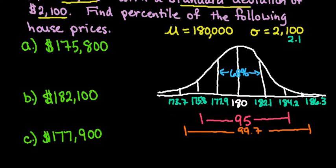So you always want to label it. Basically what we're looking for is this value here, 175.8, we have 182.1, and then we are also looking for 177.9. So those are the values that we are looking for.